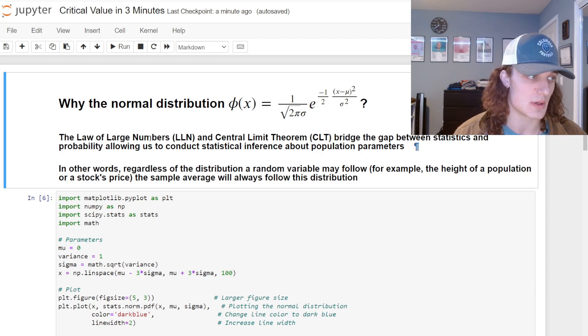is by the Law of Large Numbers and the Central Limit Theorem we can bridge the gap between statistics and probability. This is going to allow us to conduct statistical inference about population parameters. In other words, these theorems allow us to, regardless of the distribution, take a look at the sample average of a particular random variable.